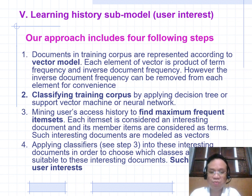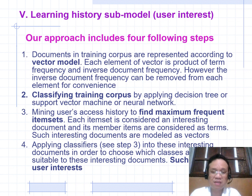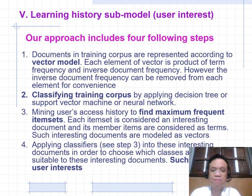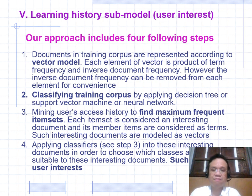Mining user access history to find the maximum frequent item set — each item set is considered an interesting document, and each member item is considered a term. Such interesting documents are modeled as a vector. Apply a classifier (Step 3) to these interesting documents to determine which class is most suitable — those classes are the user's interests. This is the four-step process.